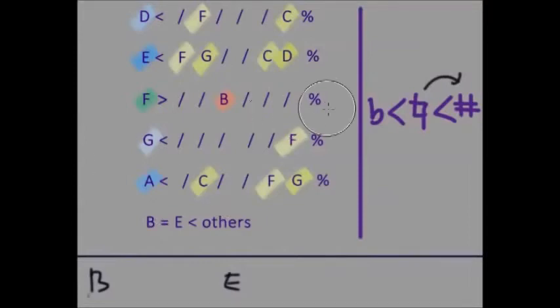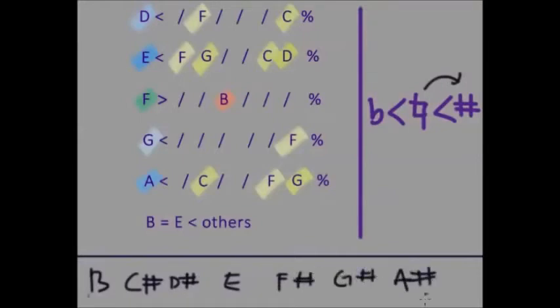...the other ones will have a higher accidental, which is sharp. So B, C sharp, D sharp, E, F sharp, G sharp, and A sharp. Okay, so B and E are same, the other ones are higher which is sharp.